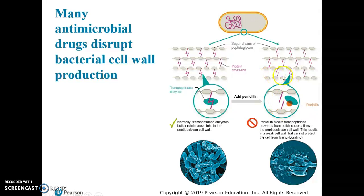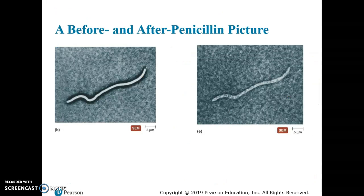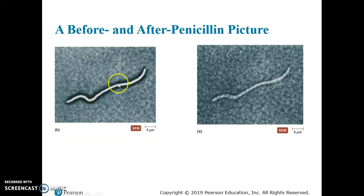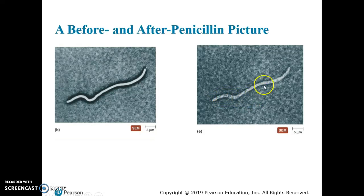What penicillin does is block the ability of these peptides to form cross-links. You end up with all of these subunits not connected, the cell wall becomes very weak with holes, and it falls apart. There's a before-and-after penicillin picture showing a bacterium — possibly a spirochete or spirillum — with a vivid white, intact cell wall before penicillin, and after penicillin you can see the cell wall integrity is lost, almost blending into the background as it falls apart.